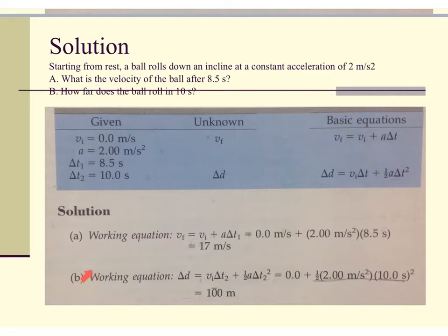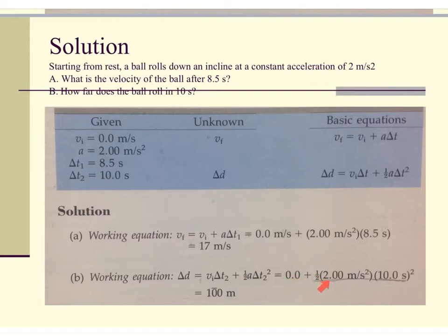Next, to find how far the ball rolls in 10 seconds, we use the formula: change in distance equals initial velocity times time plus one-half acceleration times time squared. With an initial velocity of 0, one-half times 2 meters per second squared, and time of 10 seconds squared, we do the math and get that the ball moved about 100 meters.